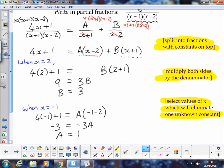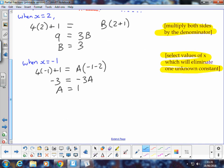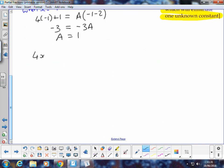We can say that the original fraction 4x plus 1 over x plus 1 times x minus 2 is equal to, well, I started off with my two fractions as x plus 1 and x minus 2.